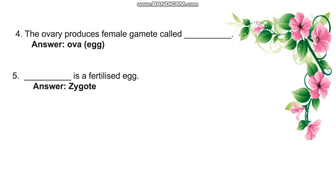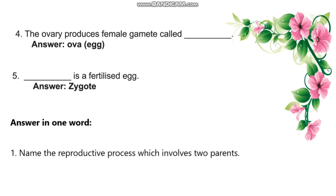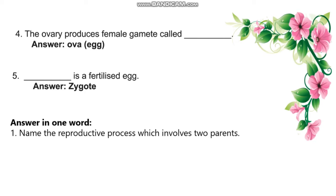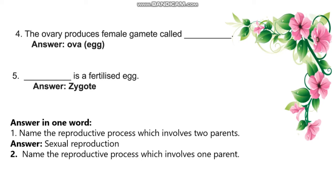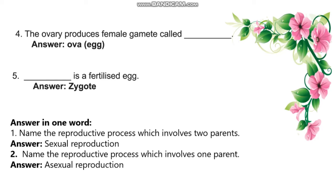A fertilized egg is called Zygote. Answer in one word: Name the reproductive process which involves two parents — the answer is sexual reproduction. Name the reproductive process which involves one parent — the answer is asexual reproduction.